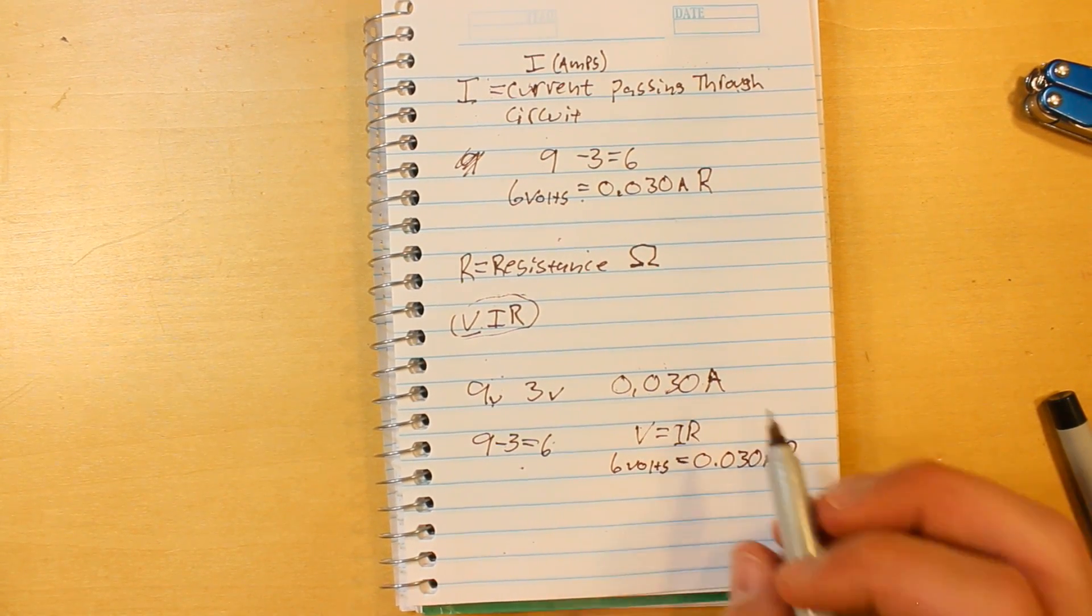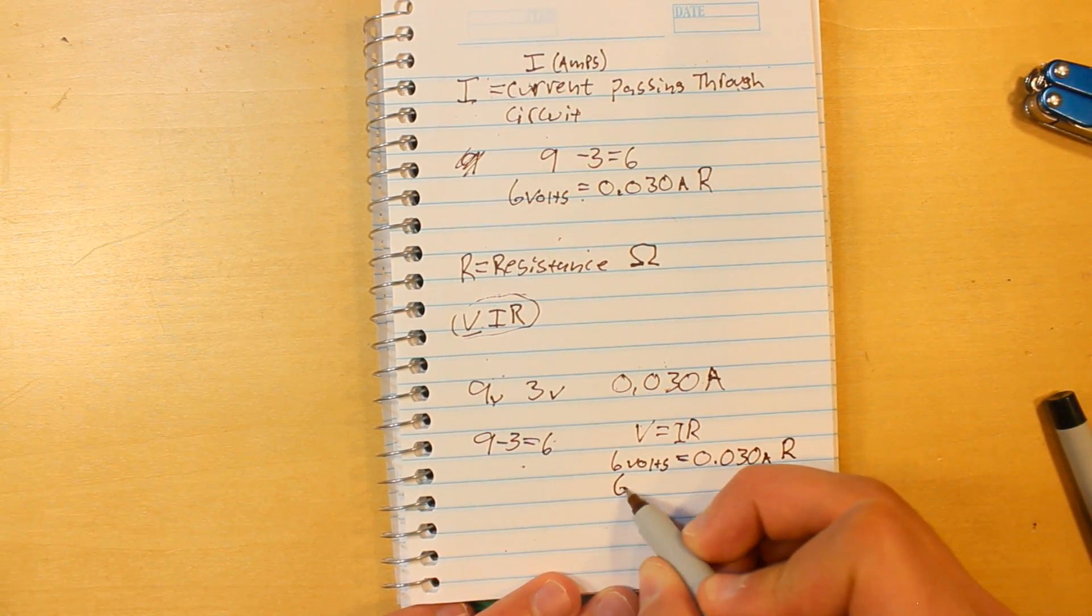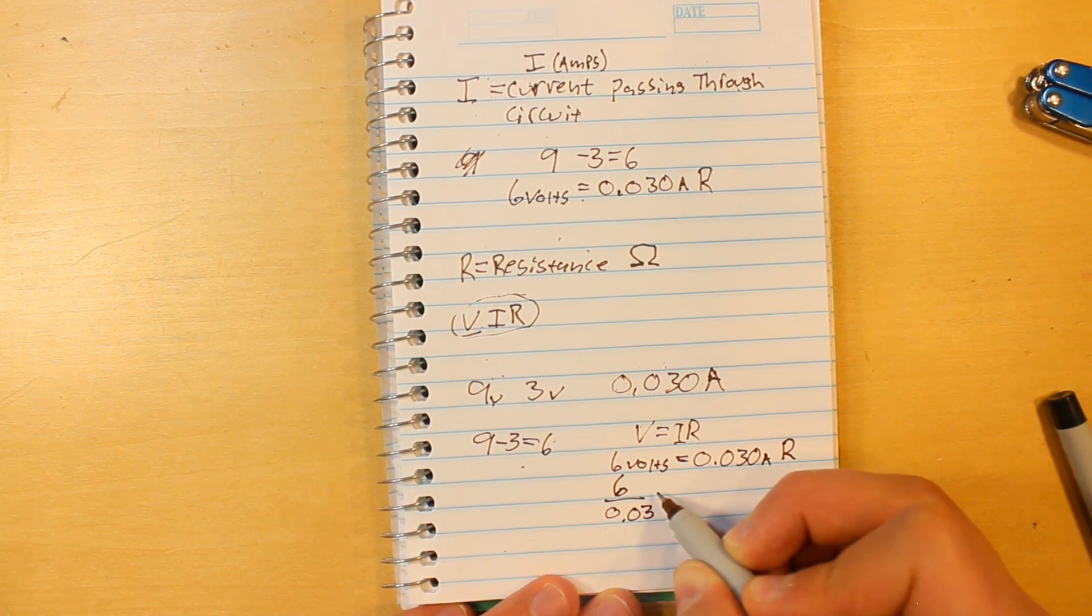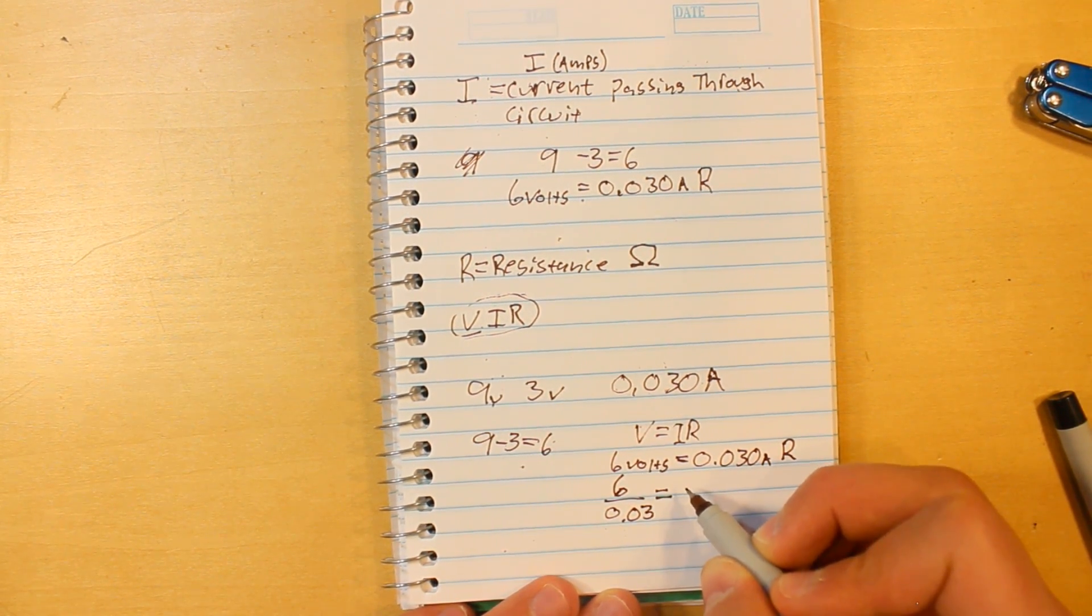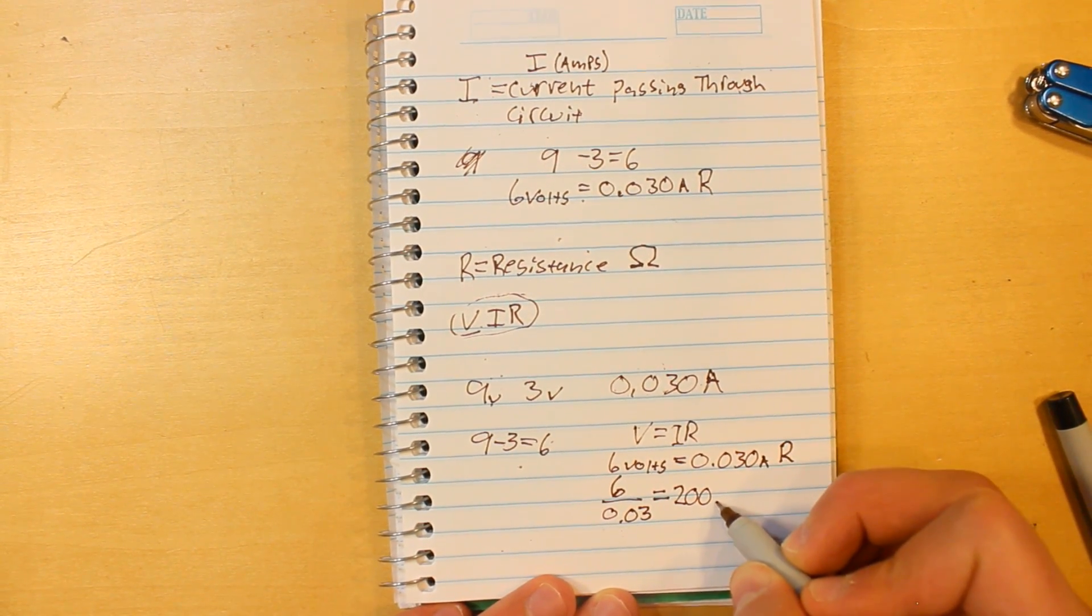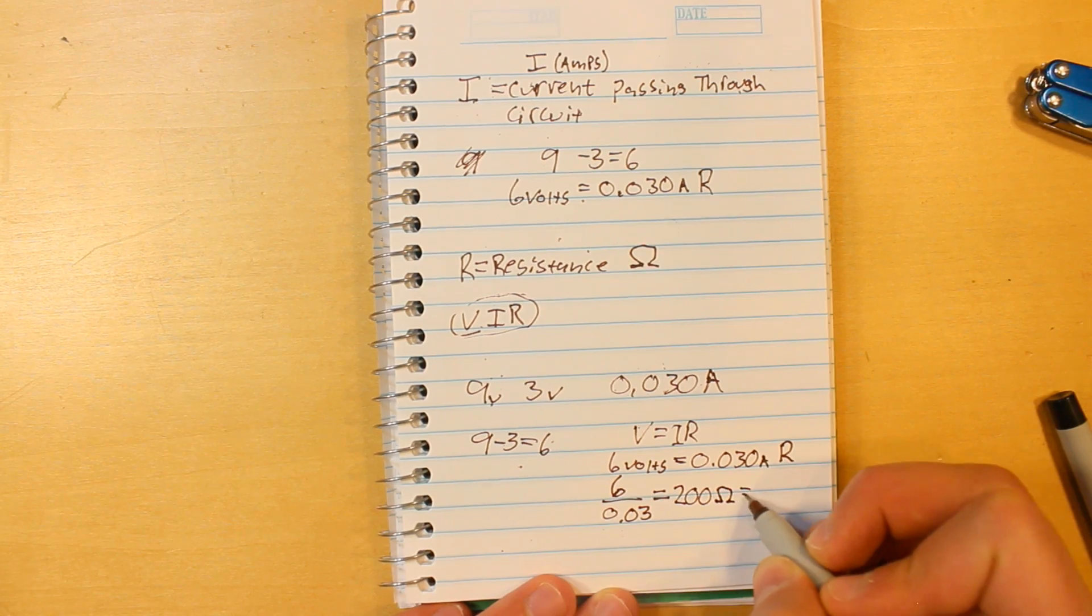and then what resistance would our resistor need to be. Well, to solve that, we'd go 6 divided by 0.03, which I think would be equal to 200 ohms equals R.